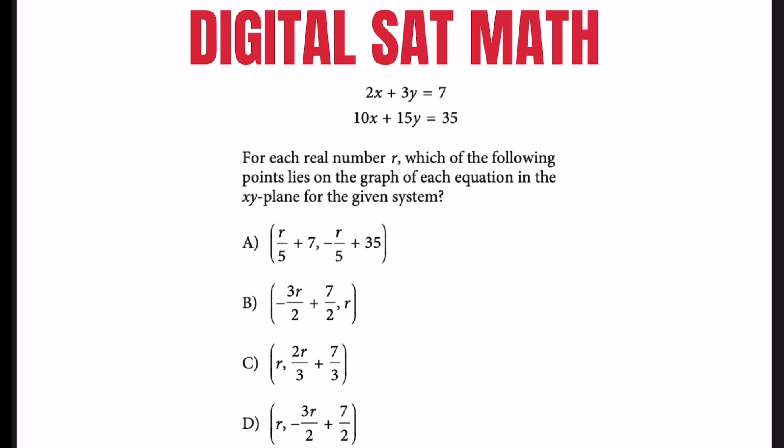In choice A they give us (r/5 + 7, -r/5 + 35). In B we have (-3r/2 + 7, r/2). In choice C we have (r, 2r/3 + 7/3). And in choice D we have (r, -3r/2 + 7/2).